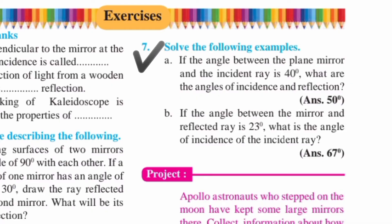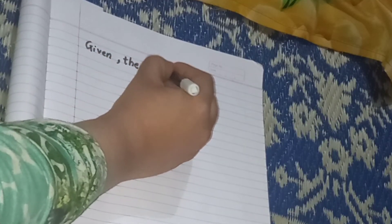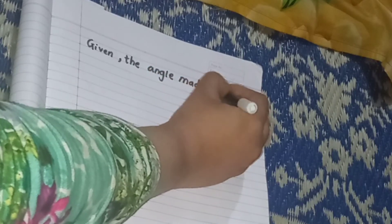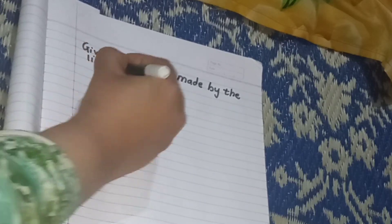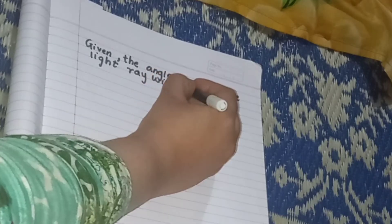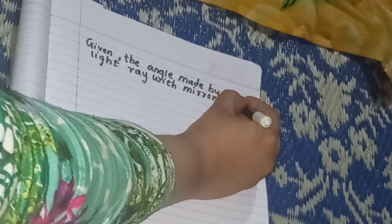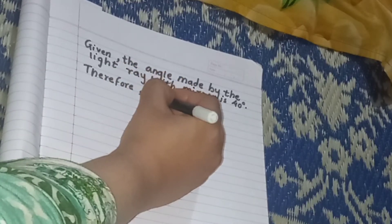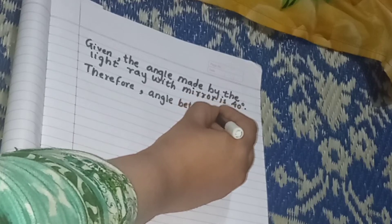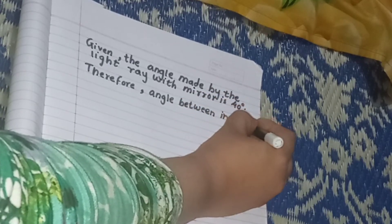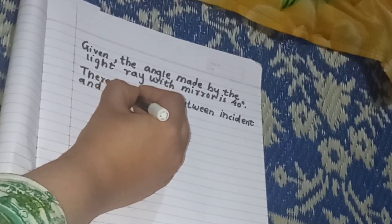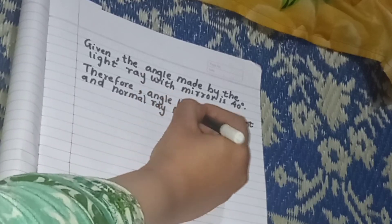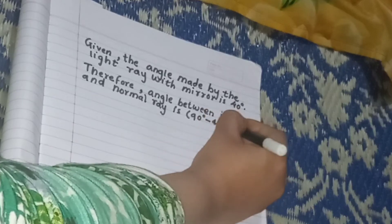Question number seven: solve the following examples. If the angle between the plane mirror and the incident ray is 40 degrees, what are the angles of incidence and reflection? The angle made by the light ray with the mirror is 40 degrees. Therefore, the angle between the incident ray and the normal is 90 minus 40 degrees, which equals 50 degrees.